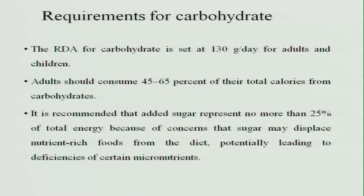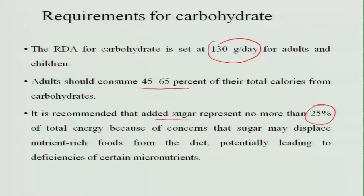Carbohydrates protect proteins. The RDA for carbohydrates is set at 130 grams per day for adults and children, and it should provide 45 to 65 percent of total calories taken per day. It is recommended that added sugar should not represent more than 25 percent of total energy, because excess sugar intake displaces other nutrient-rich foods from the diet, leading to deficiency of certain micronutrients.